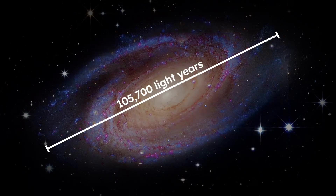If you were to measure the diameter of our galaxy, it would be in the ballpark of 105,000 light years. To put that in perspective, if you were able to stand at one edge of our galaxy and shine a flashlight across it, that beam of light would take 105,000 years to travel to the other edge.